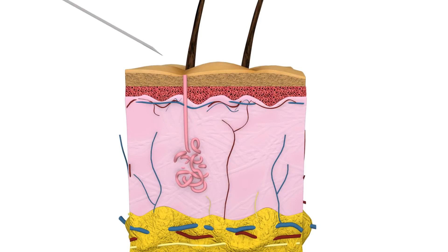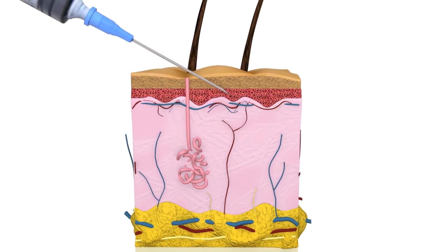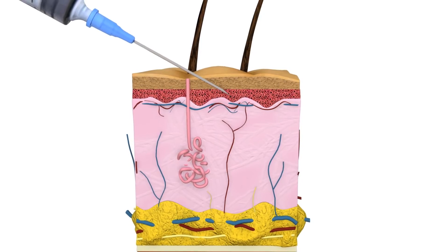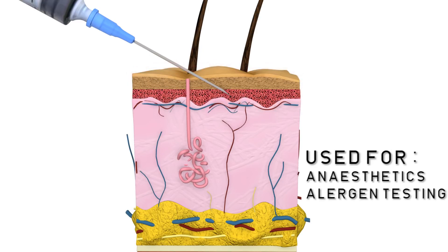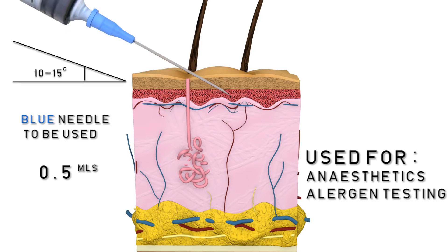The intradermal route is where medication is injected just below the top layer of the skin, the epidermis. As the injection site is not near any major muscles or blood vessels, the action of the medication is limited to the area of the injection site and is therefore primarily used for anaesthetics or allergy testing. A maximum amount of 0.5 mils of medication can be given. A blue needle should be used and inserted at a 10 to 15 degree angle.